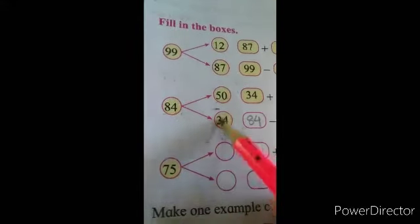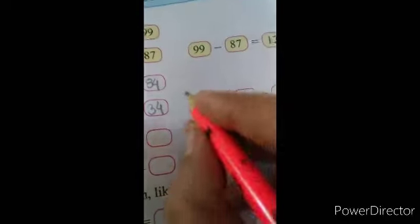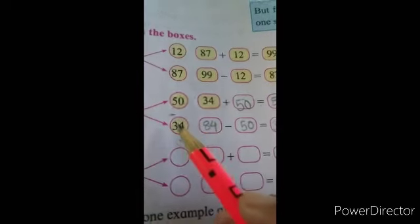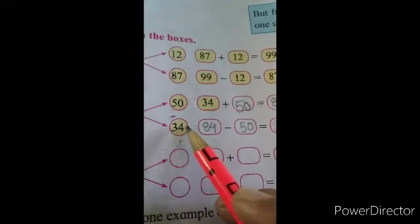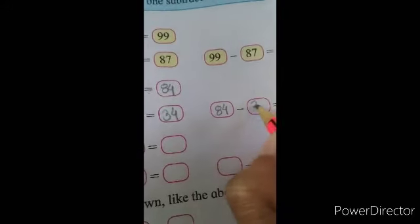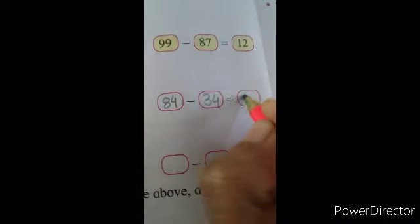Now we can make another subtraction example. Take the bigger number again: 84. Now we already took 50, so take 34 instead. So 84 minus 34, the answer will come to 50. Write 50 as the answer.